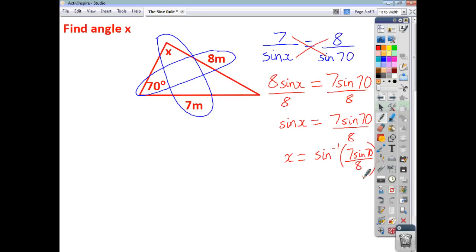Just be careful when you're doing that that you maybe do 7 sine 70. Then, perhaps press equals divided by 8. Press equals again. Then do inverse sine just to make sure that you don't end up with the wrong answer. And that gives you, to one decimal place, an angle of 55.3 degrees. And that's all there is to it. Identify that you need to use a sine rule. Fill in the blanks with the information you know. And then rearrange it to find x by doing inverse sine at the end.